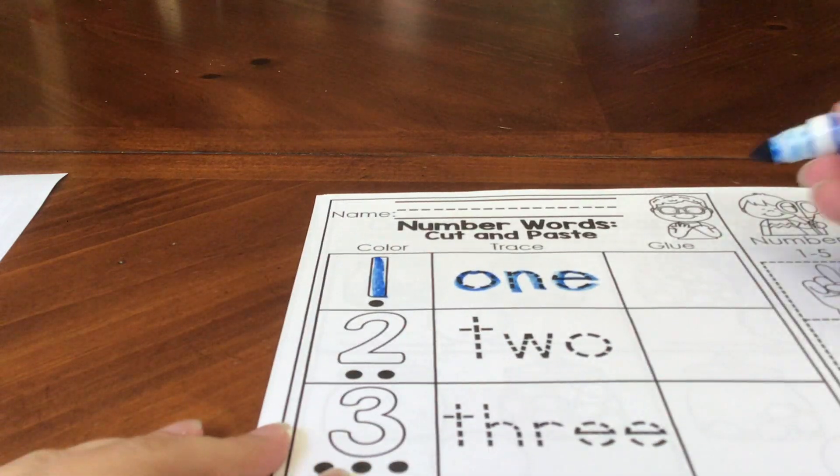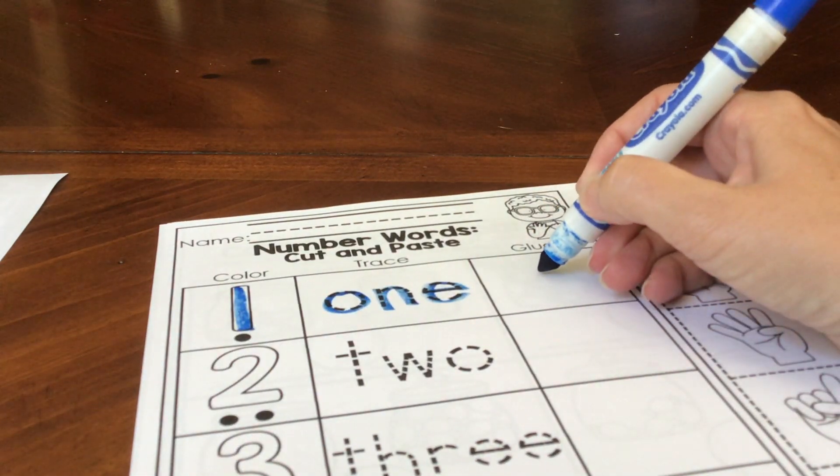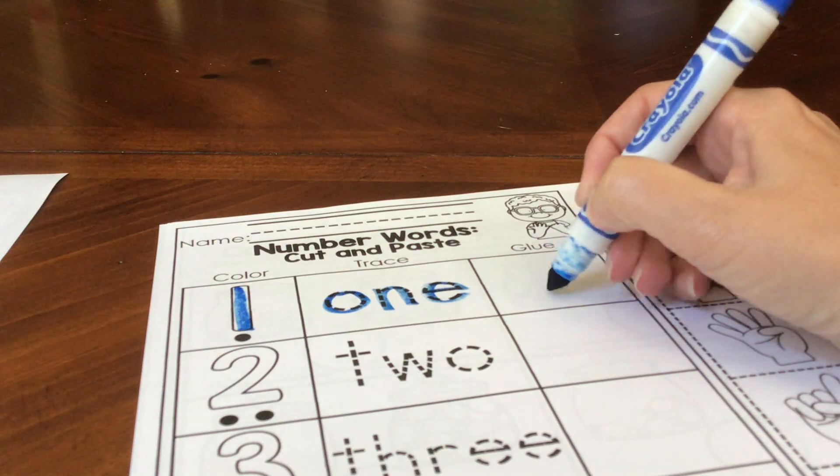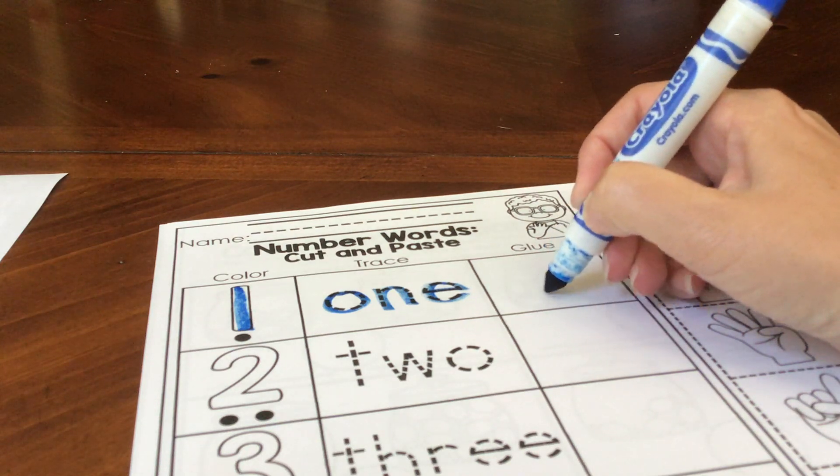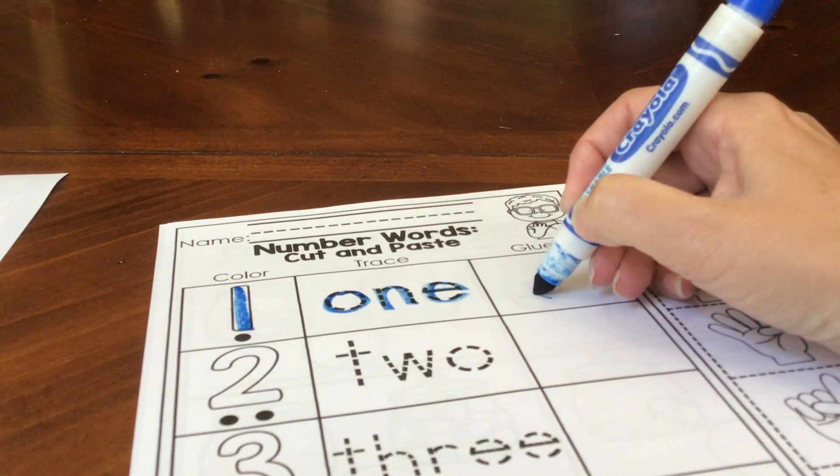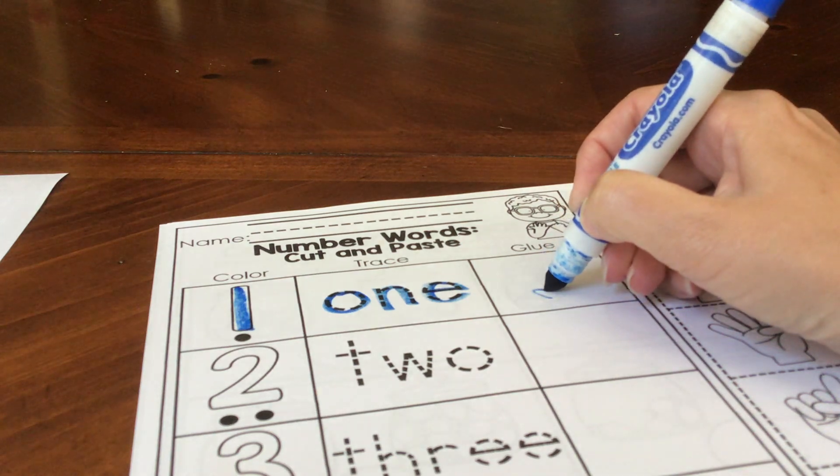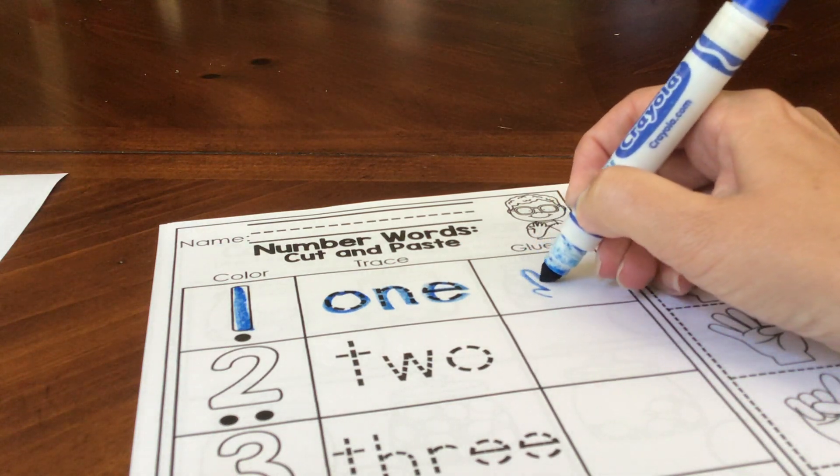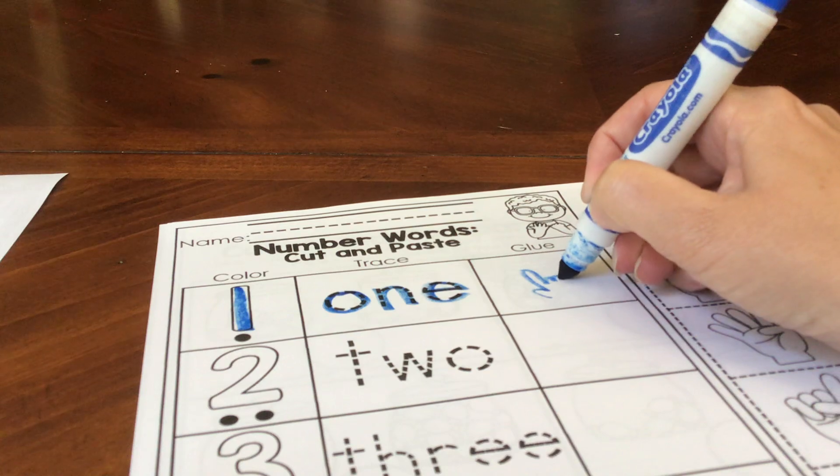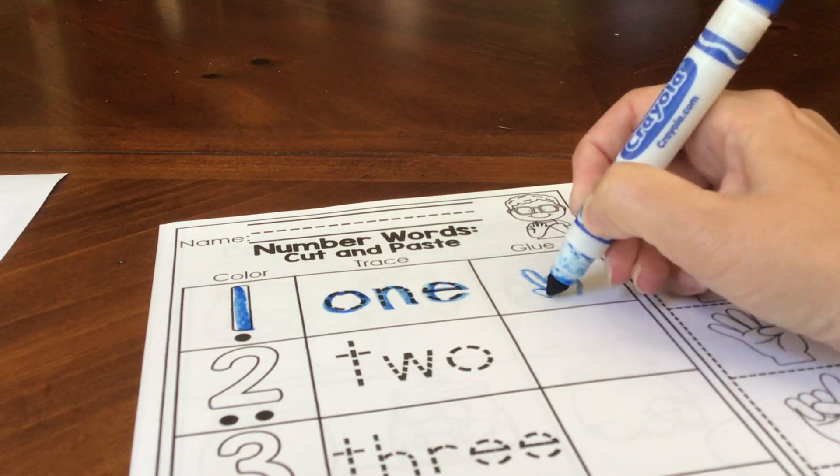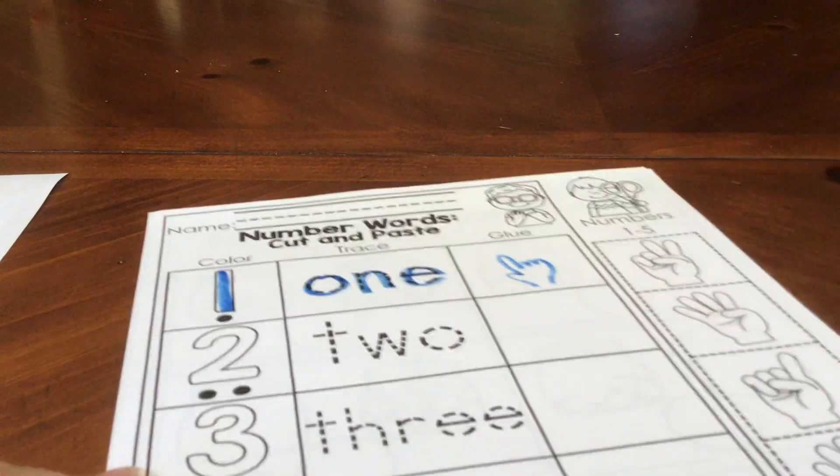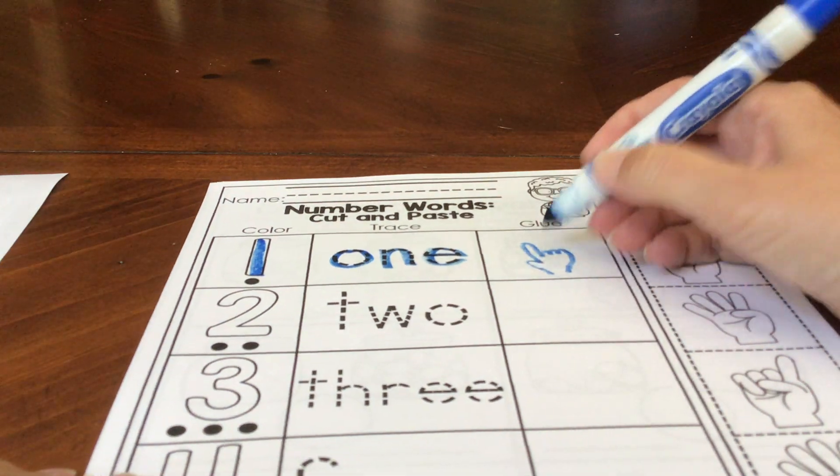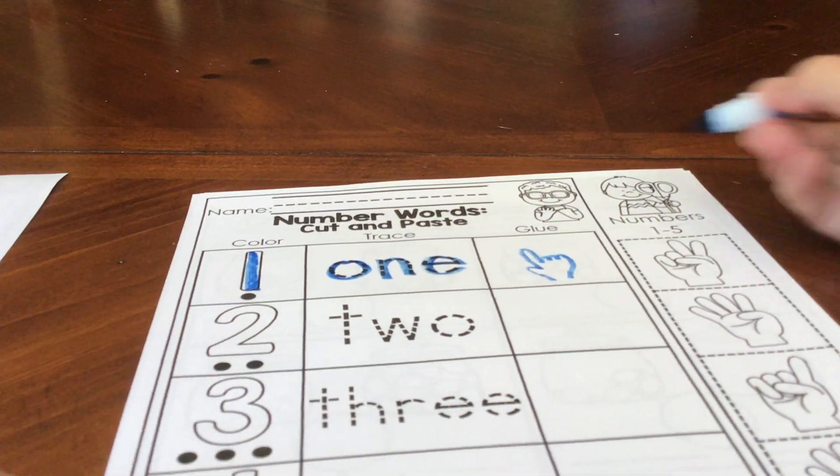We're going to draw a hand with one finger. So I'm going to draw my thumb kind of curled in. Then we're going to draw one finger going up. And then the other fingers are down. That could be one finger.